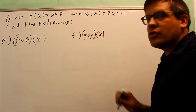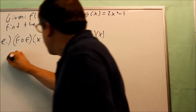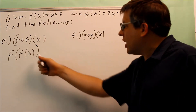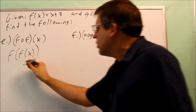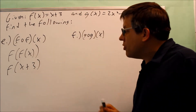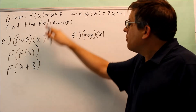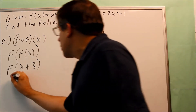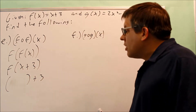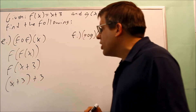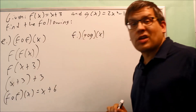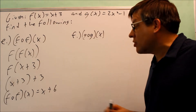Part e and f: we have f of f of x and g of g of x. For f of f of x, we're putting f of x inside of itself. We replace the inner f of x with x plus 3. This is saying take x plus 3 and put it back in there in place of x. So you have a space plus 3, and that space gets filled with x plus 3. Simplifying that gives you x plus 6. There's nothing more you can do — that's your answer for f of f of x.